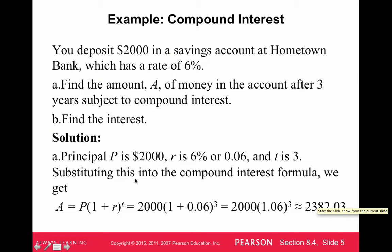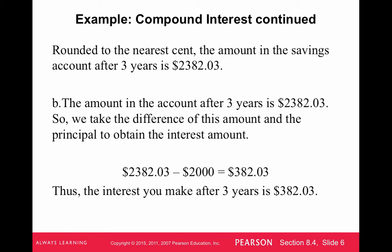If you have a graphing calculator or a TI-30X2S, you'll be able to plug that all in one line with the parentheses and see that entire formula. So rounded to the nearest cent, the future value is $2,382.03. If we wanted to figure out the interest gained, it would just be the future value $2,382.03 minus the $2,000 we started with. The interest earned after three years is $382.03.